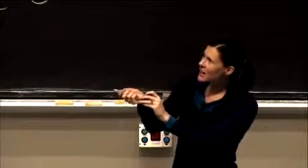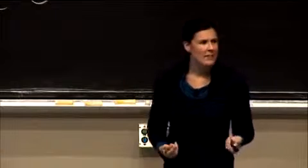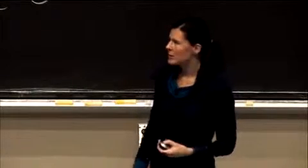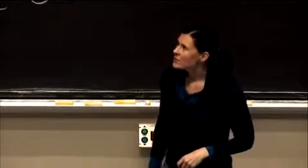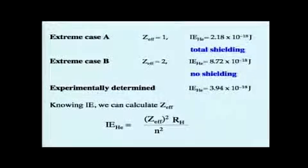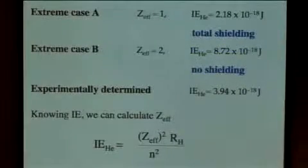And if we experimentally know what the ionization energy is, we actually have a way to find out what the Z effective will be equal to. And we can use this equation here. This is just the equation for the ionization energy, which is the same thing as saying the negative of the binding energy. That's equal to Z effective squared RH over N squared.